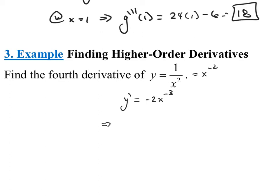That tells me that the second derivative would be negative 2 times negative 3, which would be a positive 6, x to the negative 3 minus 1, which is negative 4 — just using my power rule and the constant multiple rule. Now I'm going to find the third derivative, y triple prime. That would be 6 times negative 4, which is negative 24, x to the negative 4 minus 1, which is negative 5 — again using the power rule and constant multiple rule.